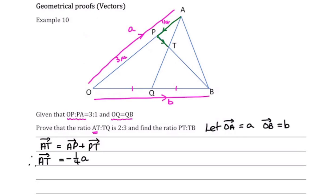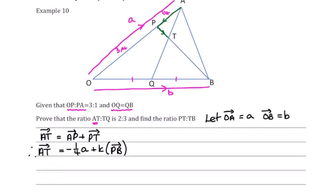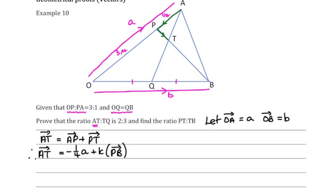P to T is some fraction of P to B, so I'm going to call that fraction k — P to T equals k lots of P to B. To get from P to B, that's minus three-quarters a plus b. So the first route gives us: A to T equals minus a quarter of a plus k times (minus three-quarters a plus b).